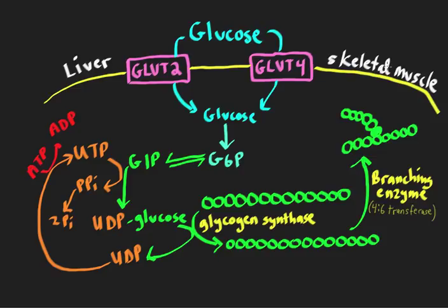Skeletal muscle can't have constitutively active glucose transporters. We want the glucose transporters to be translocated to the membrane only when we want skeletal muscle to be taking up glucose. During periods of fasting, the skeletal muscle can't release glucose anyway, so it wouldn't make sense to have them there. There's a different transporter — GLUT4 — that's regulated by insulin. The insulin transduction pathway triggers the translocation of these transporters to the surface of skeletal muscle. Regardless of which transporter, once glucose is inside the cell, the rest of the pathway is the same.